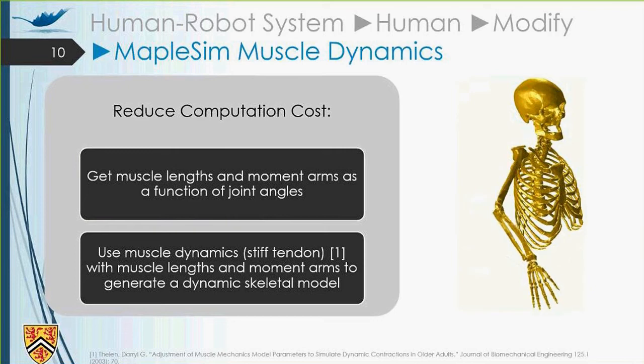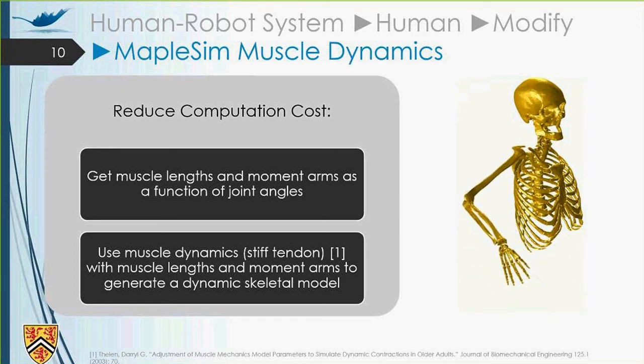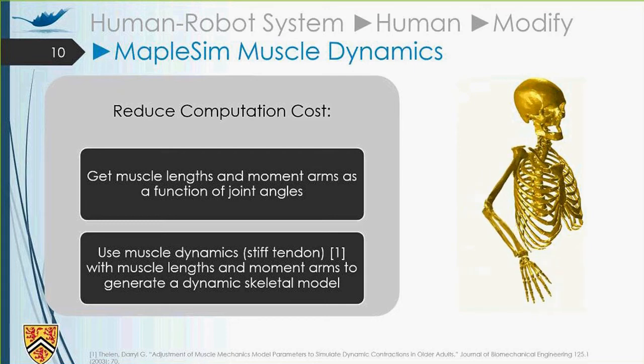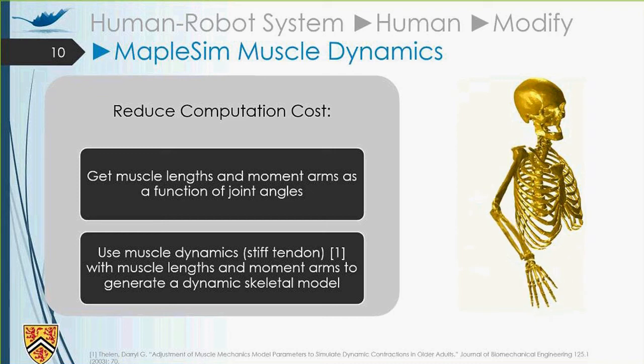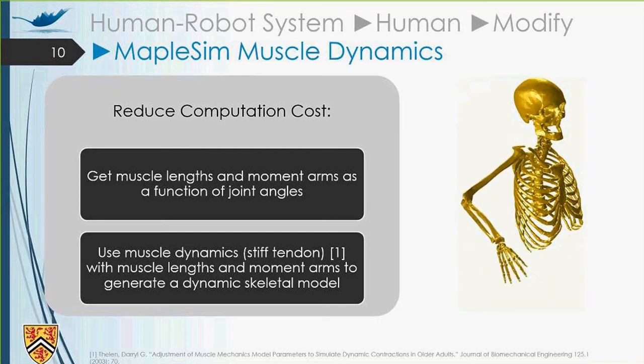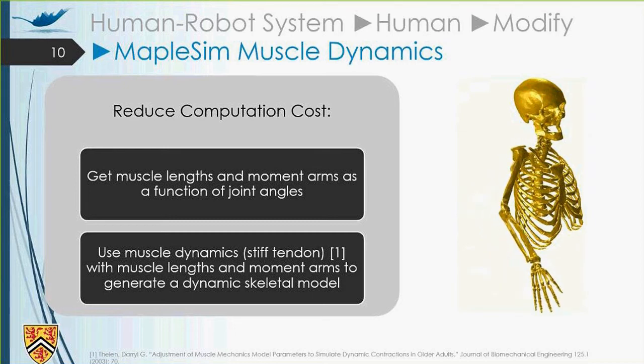To include MapleSim muscle dynamics, we should know that we need to run the system in real time, or we need to decrease the computation cost of the system. So if we include the muscle dynamics with muscle wrappings at the same time, we may have problems. In order to prevent this problem, we got the muscle length and muscle moment arms as joint angles, and we got rid of those old wrappings at a time, and we generated a skeletal model based on the musculoskeletal model that we had. Also, we use muscle dynamics with a stiff tendon, because the tendon, if it has some compliance, it will cause some difficulties in solving the problems and increase the computation cost. So we consider the stiff tendon for the muscle dynamics to model the system and model the muscles.